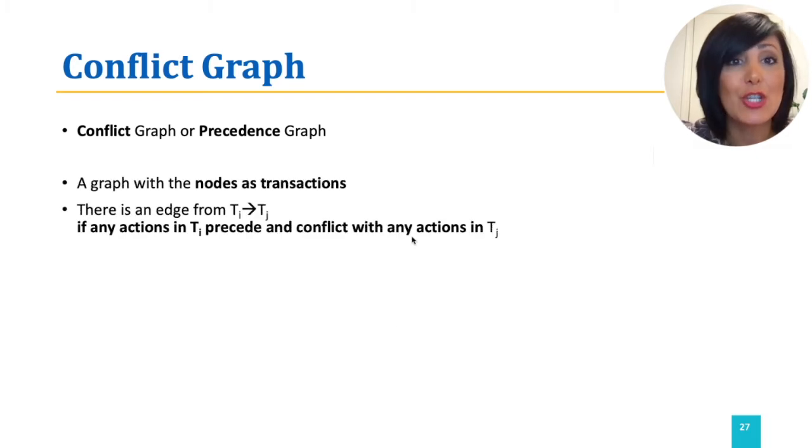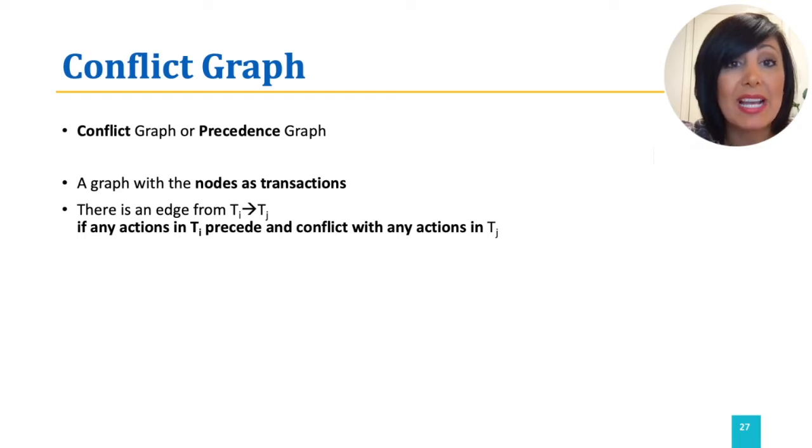In this graph, each node represents a transaction, and each directed link represents a conflict. So if there are transactions TI and TJ, and there is a conflicting action in TI that precedes in time the action which is conflicting with it in TJ, there is an edge from TI to TJ.